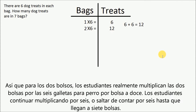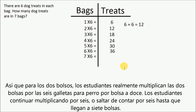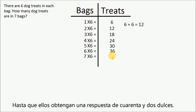So, for two bags, students really are multiplying the two bags by the six treats per bag to get twelve. Students will continue on by multiplying by six, or skip counting by six, until they get up to seven bags. They will then get an answer of forty-two treats.